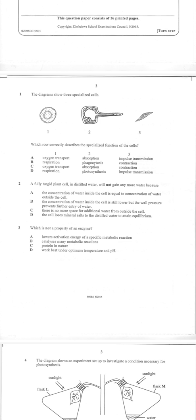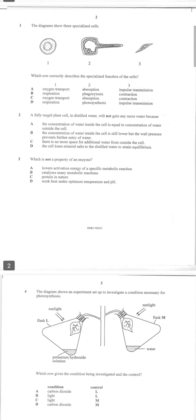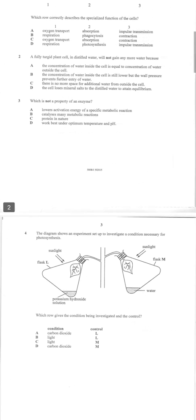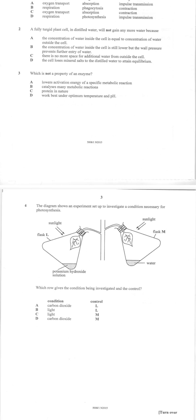And then we go to number two. It says a fully turgid plant cell in distilled water will not gain any more water because the answer is C again: there is no more space for additional water from outside the cell.